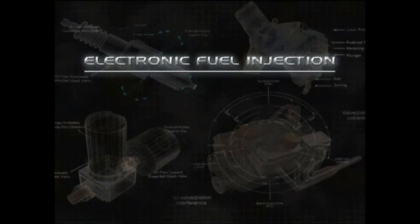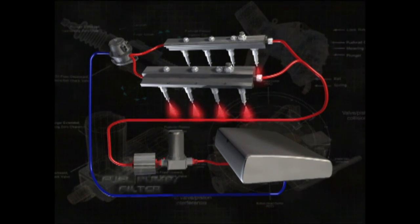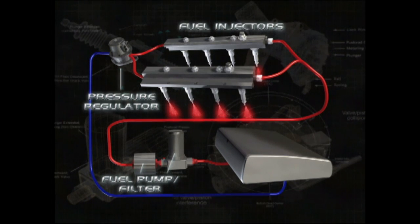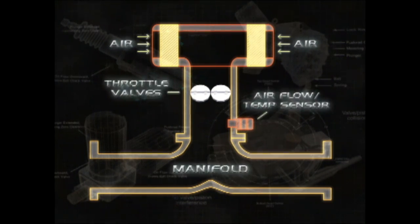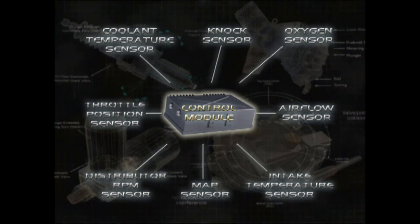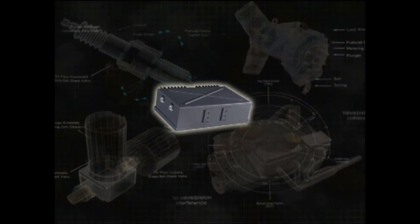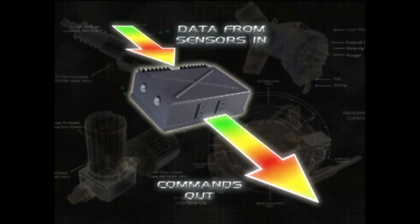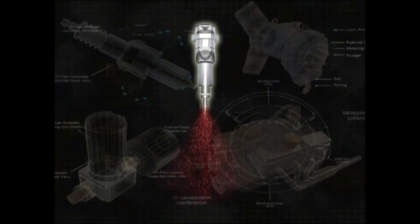Electronic fuel injection has four subsystems: fuel, air, sensor, and computer control. The fuel system delivers fuel to the injectors and consists of a fuel pump and filter, a pressure regulator, fuel injectors, and lines and hoses. The air system delivers air to the intake manifold and consists of an air filter, throttle valves, sensors, and ductwork. The sensor system monitors operating conditions and sends data to the engine control module, monitoring everything from air inlet temperature to exhaust oxygen levels. The computer control system uses sensor data to precisely control the amount of fuel delivered by the injectors and the amount of air entering the intake, with the engine control module — a pre-programmed microcomputer — serving as the brain.